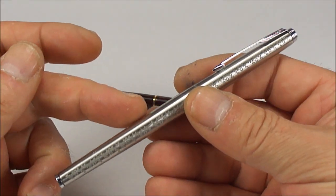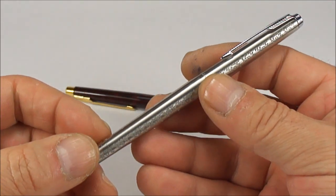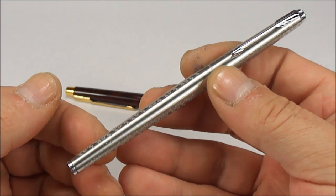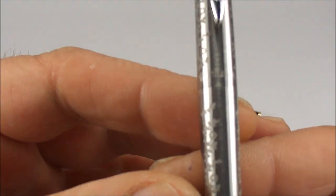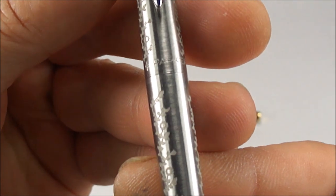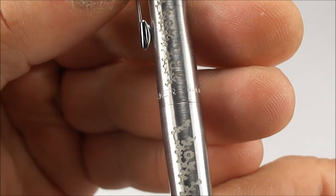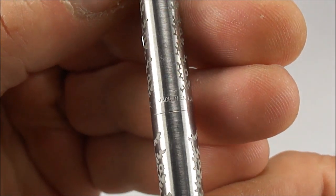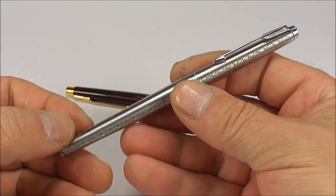The Parker 180 fountain pen was launched around 1977 through to about 1985. This particular one, if I show you the cap imprint, says Parker made in England and the letter UC, which dates this pen to 1981.